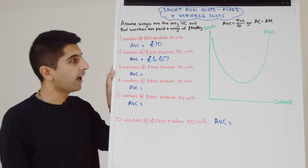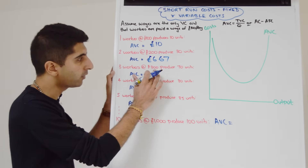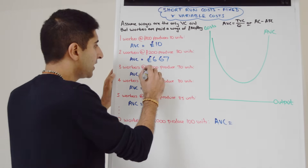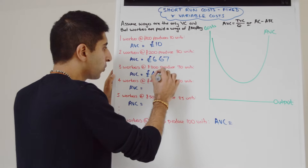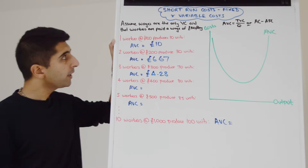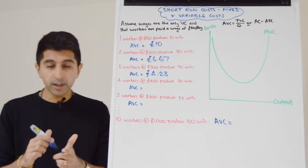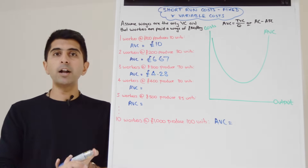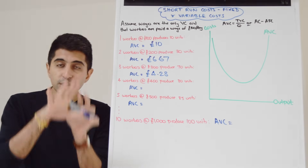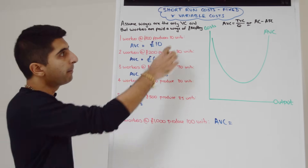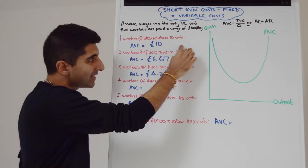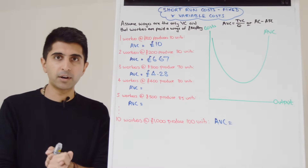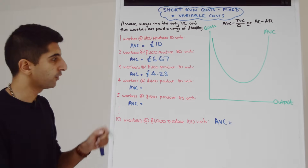Three workers are hired: total variable cost is £300, they together produce 70 units, and therefore AVC is £300 divided by 70 = £4.28. Up to three workers we can see increasing returns to labour — labour productivity is rising, marginal product is rising (10, then 20, then 40), and that is reducing average variable cost. Increasing marginal product and increasing labour productivity will reduce average variable cost.